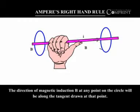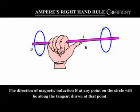The direction of magnetic induction B at any point on the circle will be along the tangent drawn at that point.